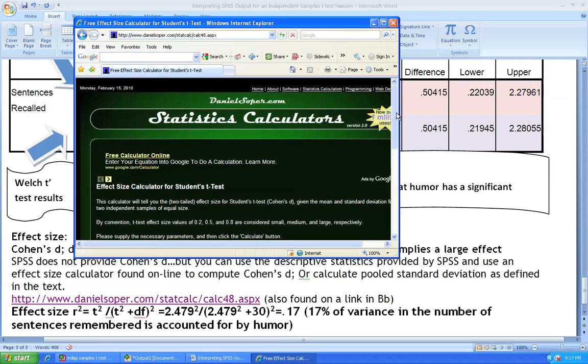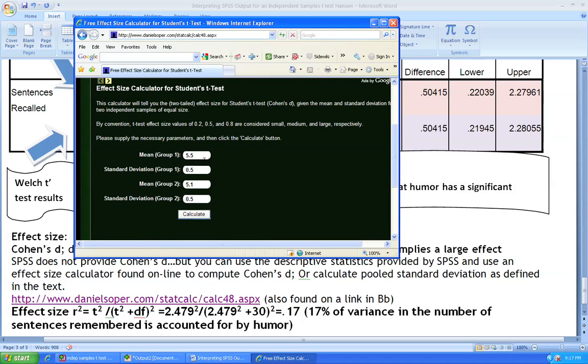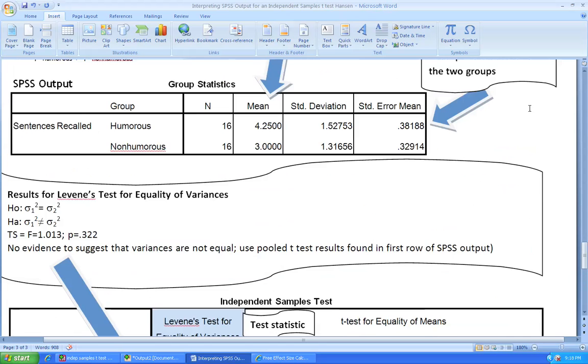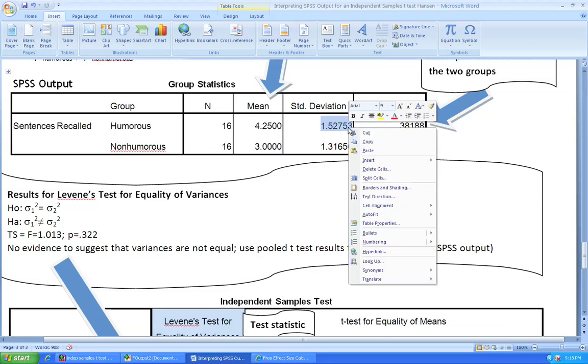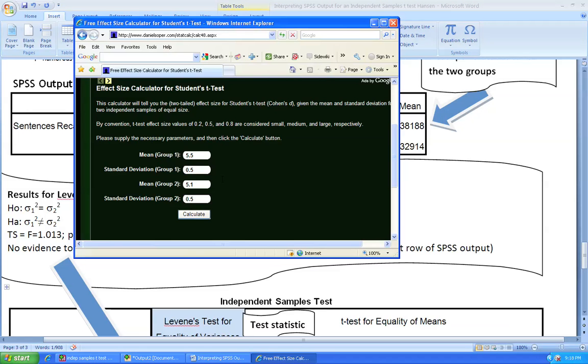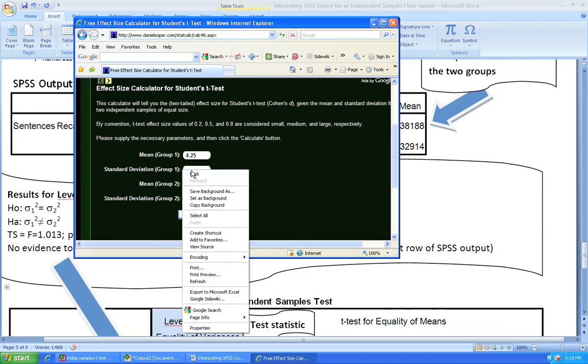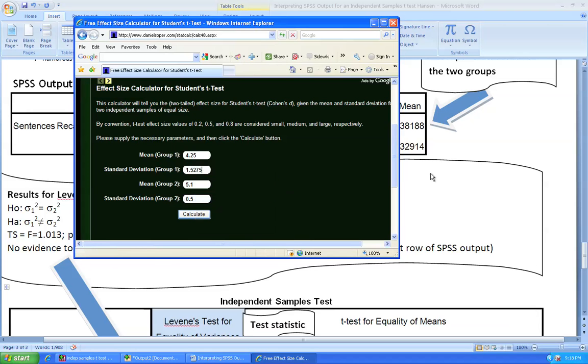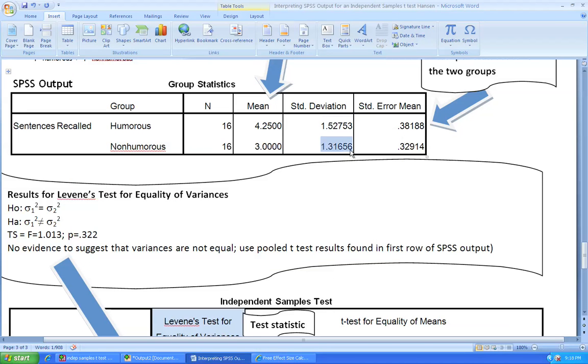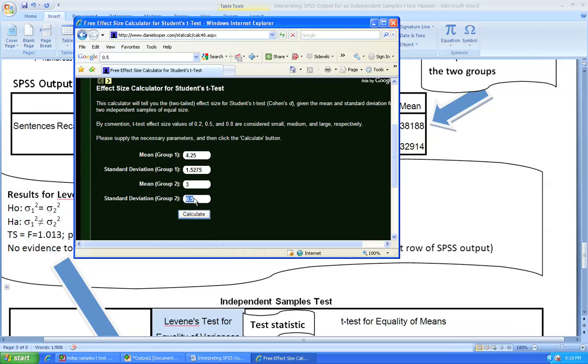As the website opens, you will notice that in order to compute Cohen's D effect size, we will need to enter the mean and standard deviation of group 1 and the mean and standard deviation of group 2. Going back to the SPSS output, I note that the mean of group 1 is 4.25 and the standard deviation is 1.52753. So I am going to enter 4.25 for the mean of the first group and then the standard deviation of the first group.